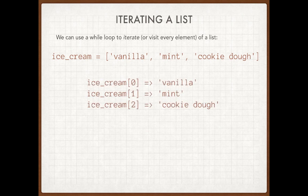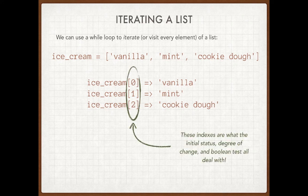Ice cream drawer 0 has vanilla in it, ice cream 1 is mint, ice cream 2 is cookie dough. These are the fundamental concepts of a list — they are indexed by numbers, those indexes always start at zero, and they go up one by one. If I'm going to write a loop to do this, it's pretty clear that the indexes are what the loop needs to cope with. The initial status, the degree of change, and the Boolean test all have something to do with those indexes.